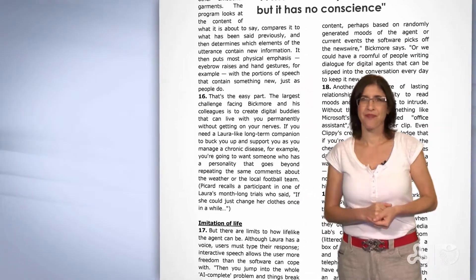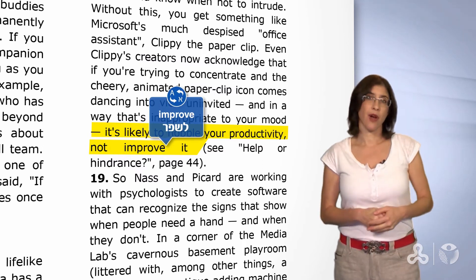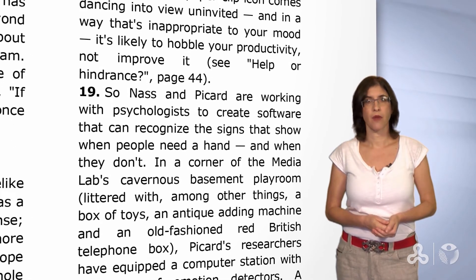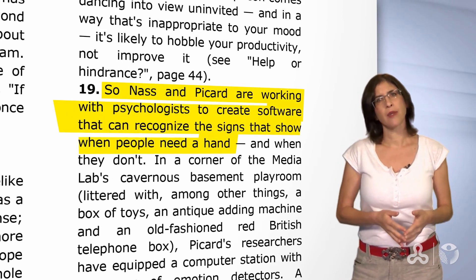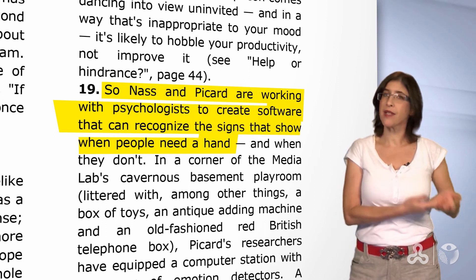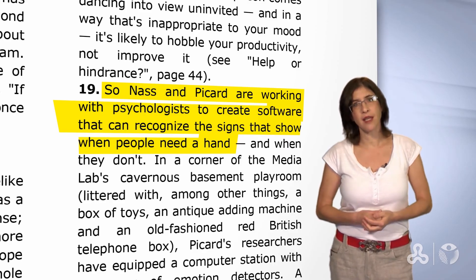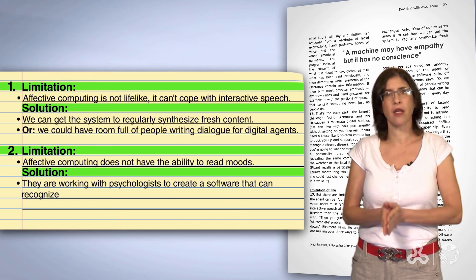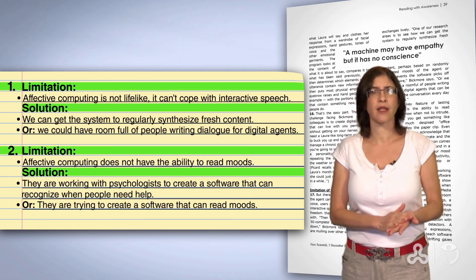The end of paragraph 18 reads: 'It's likely to humble your productivity, not improve it.' How are they trying to solve this? Let's zoom in on the beginning of paragraph 19. Nass and Picard — our supporters of effective computing — are working with psychologists to create software that can recognize the signs that show when people need a hand. Psychologists certainly know about moods, so they are working with psychologists to create software that can see when people need help. So we found our solution: they are working with psychologists to create software that can recognize when people need help, or software that can read moods.